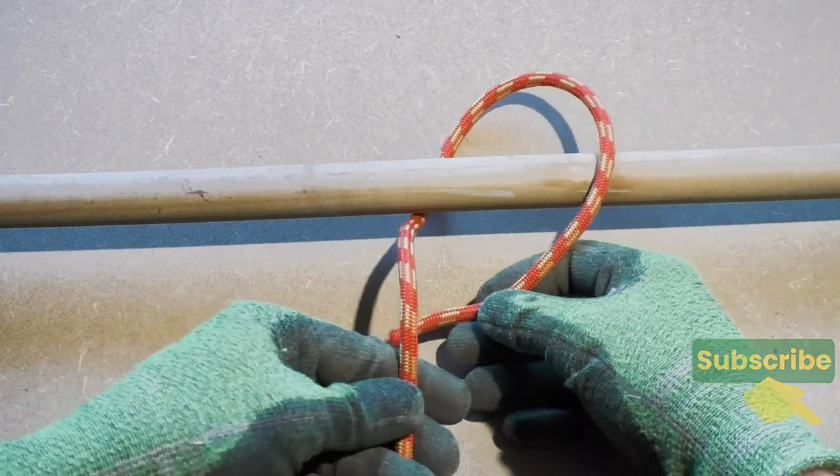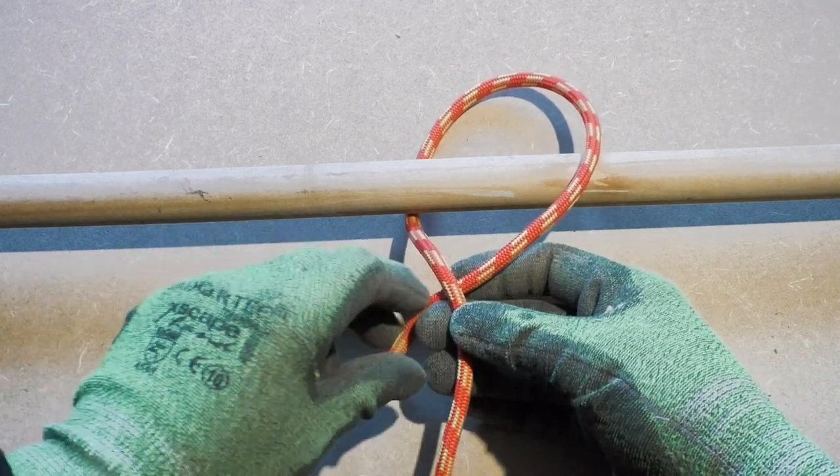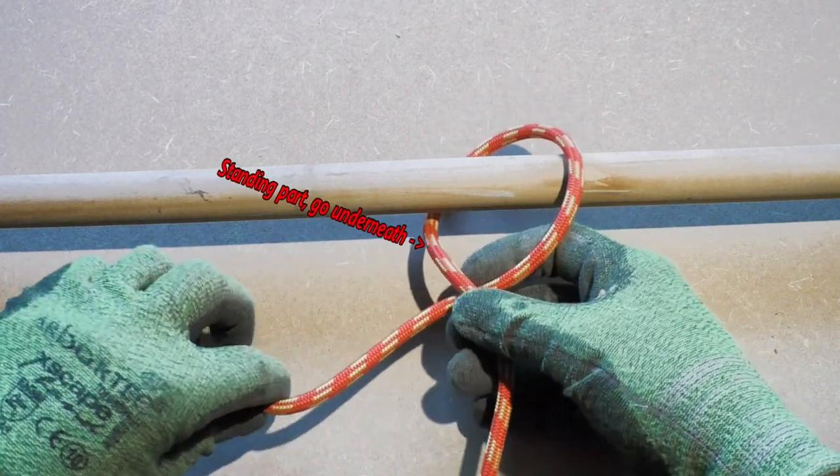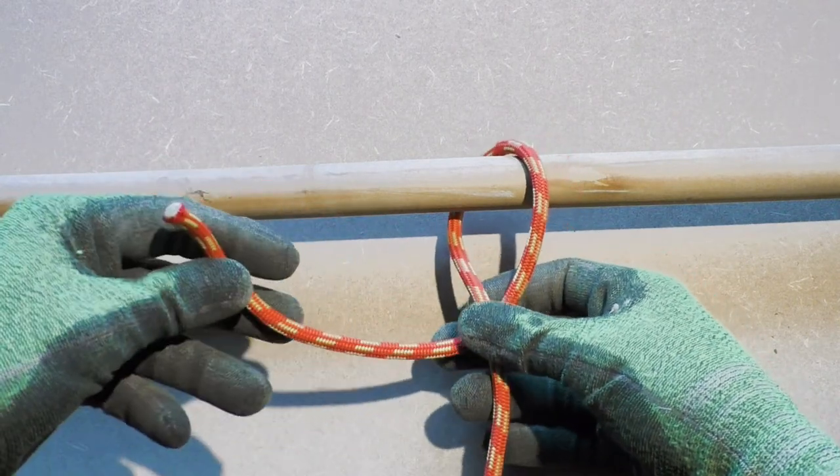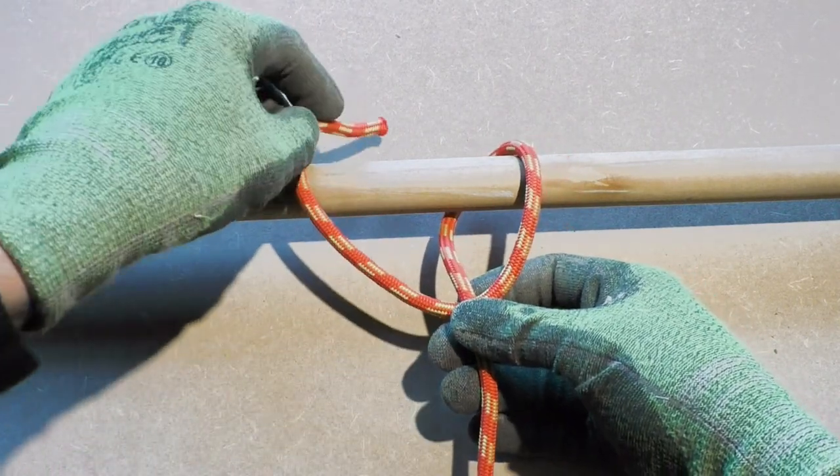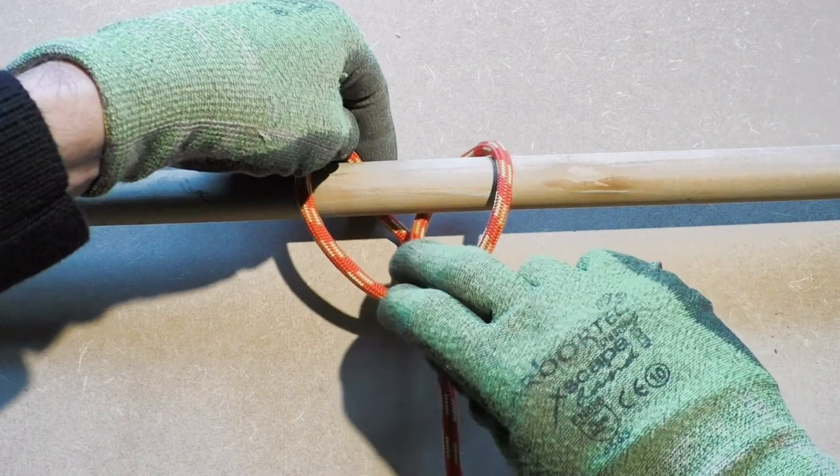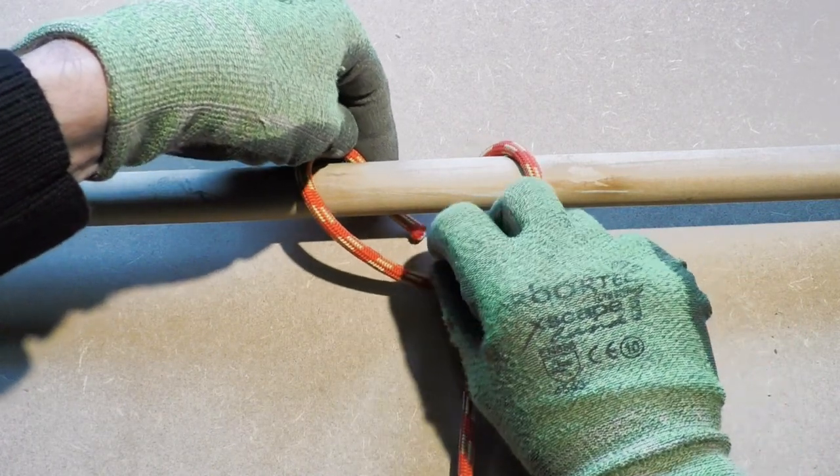Next you take the working end and go underneath the standing part of the line. We are now forming the bite for the cow hitch. We take the working end and then we go around the object again. This time it is in the opposite direction of the first loop.